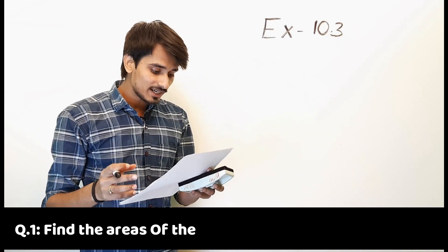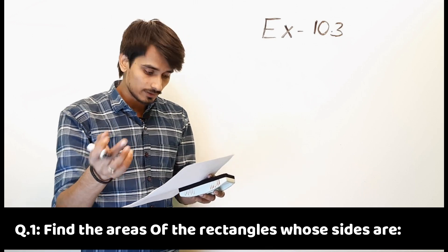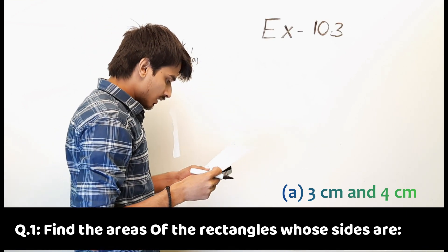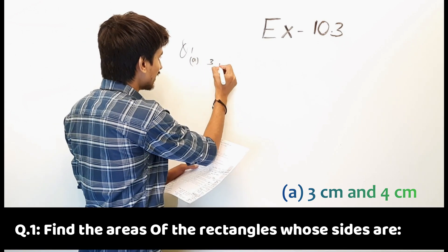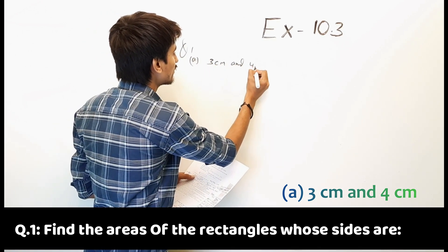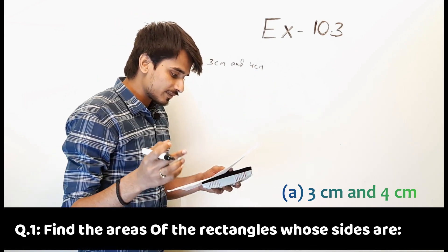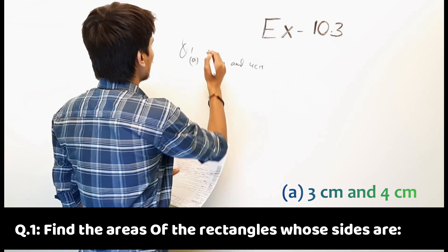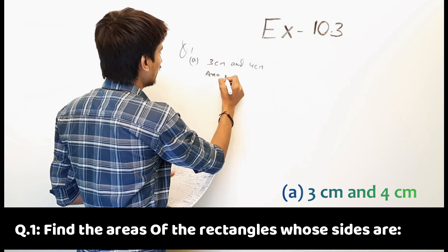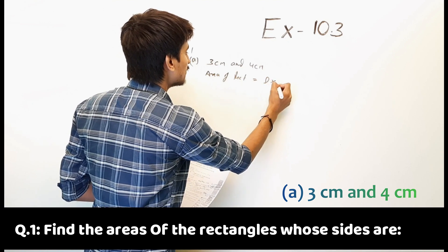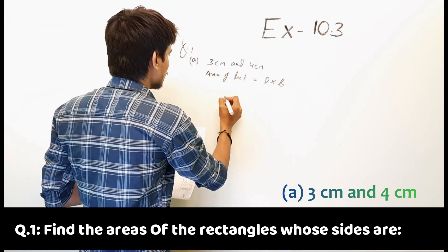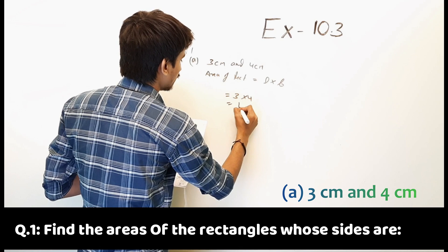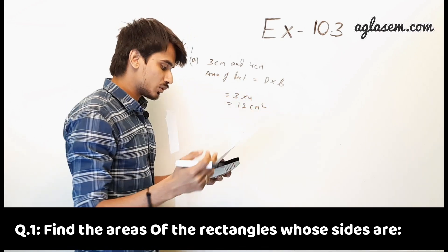First question: find the areas of rectangles whose sides are given below. Part A: sides are 3 cm and 4 cm. The formula for area of rectangle is equal to length multiplied by breadth. So 3 multiplied by 4 is equal to 12 cm square. So the answer is 12 cm square.